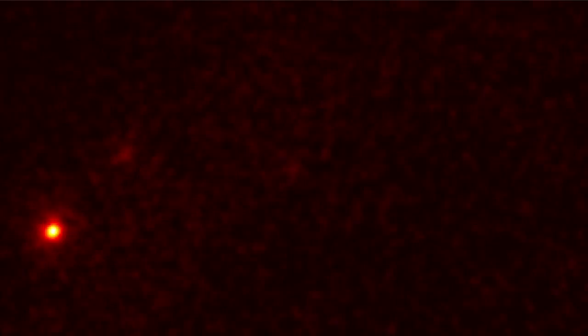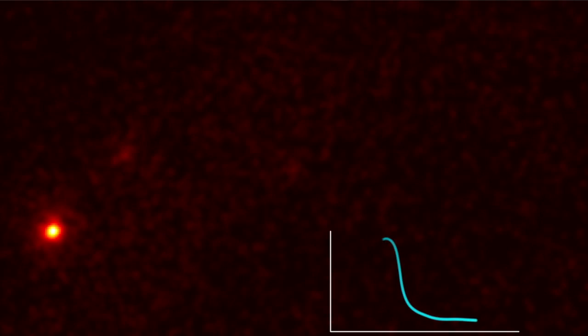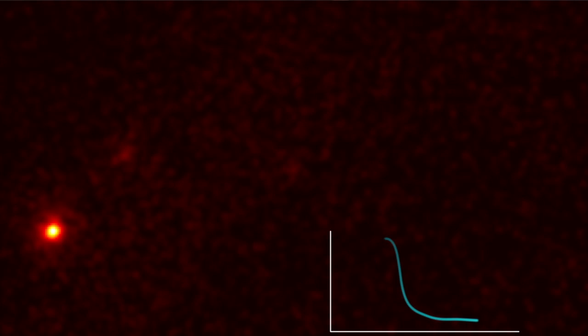But as bright as the pulsar is in gamma rays, it isn't the source of the flares. NASA's Fermi Gamma-ray Space Telescope can look in between the pulsar's brilliant pulses to reveal the faint gamma rays from the underlying nebula.